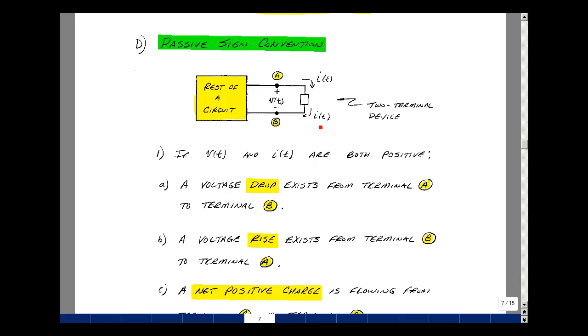Suppose I hook up a two terminal element to a circuit and I label these nodes A and B, and I'm going to label the voltage from A to B, and I'll show the current flowing in this direction.